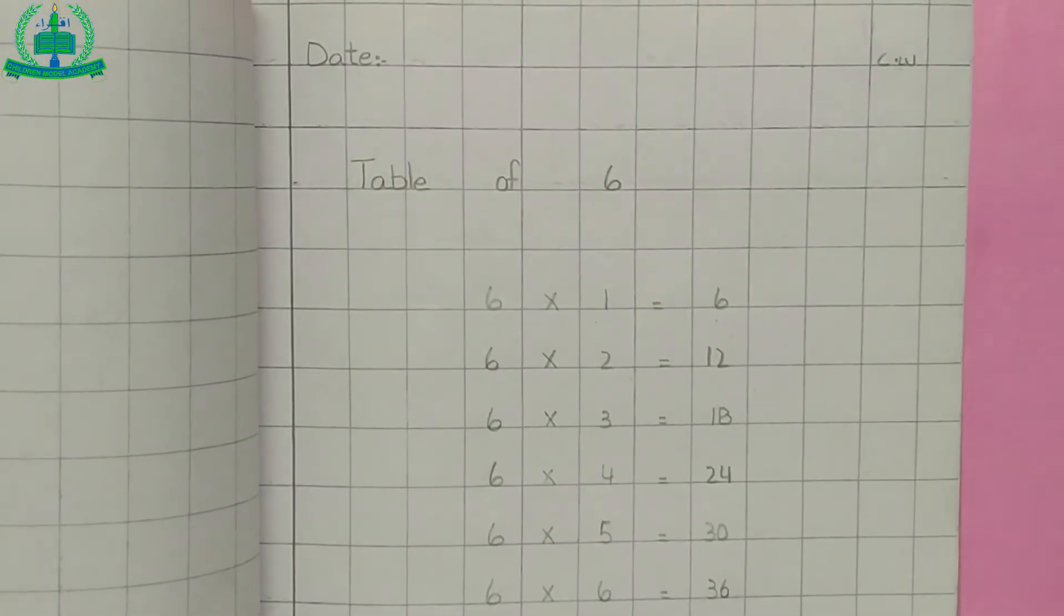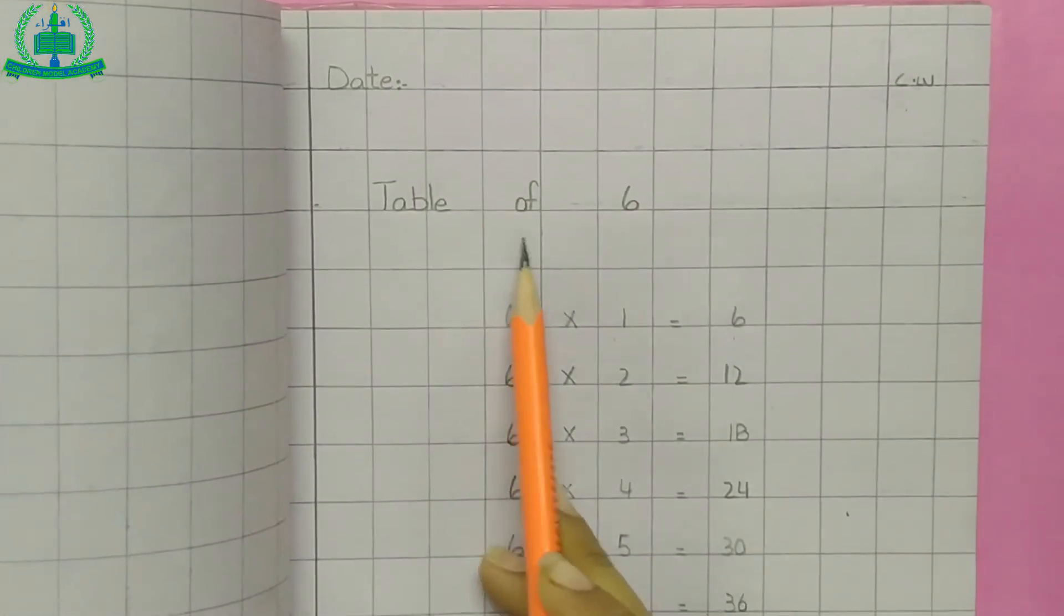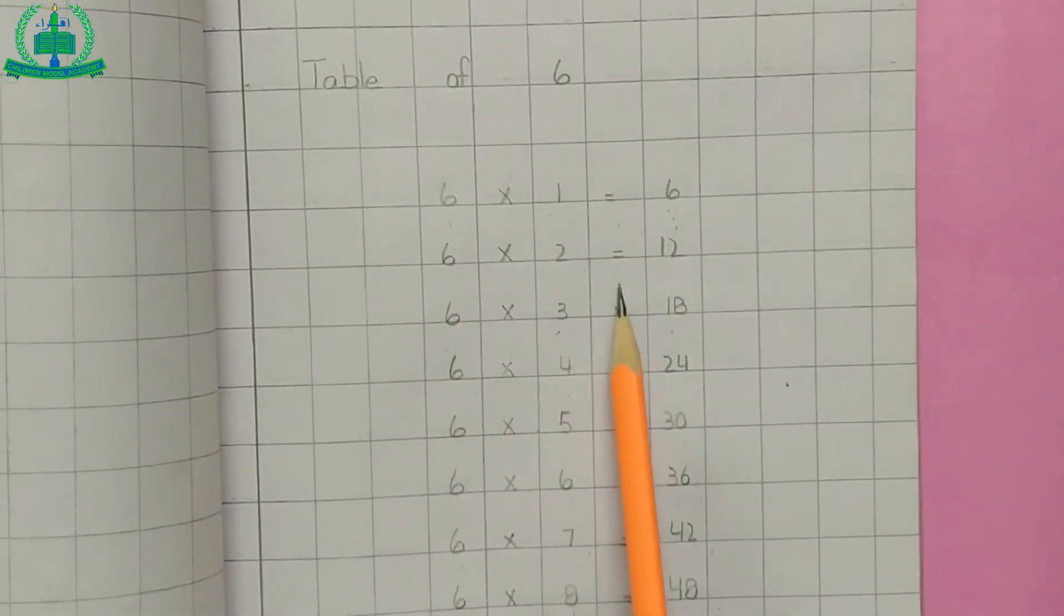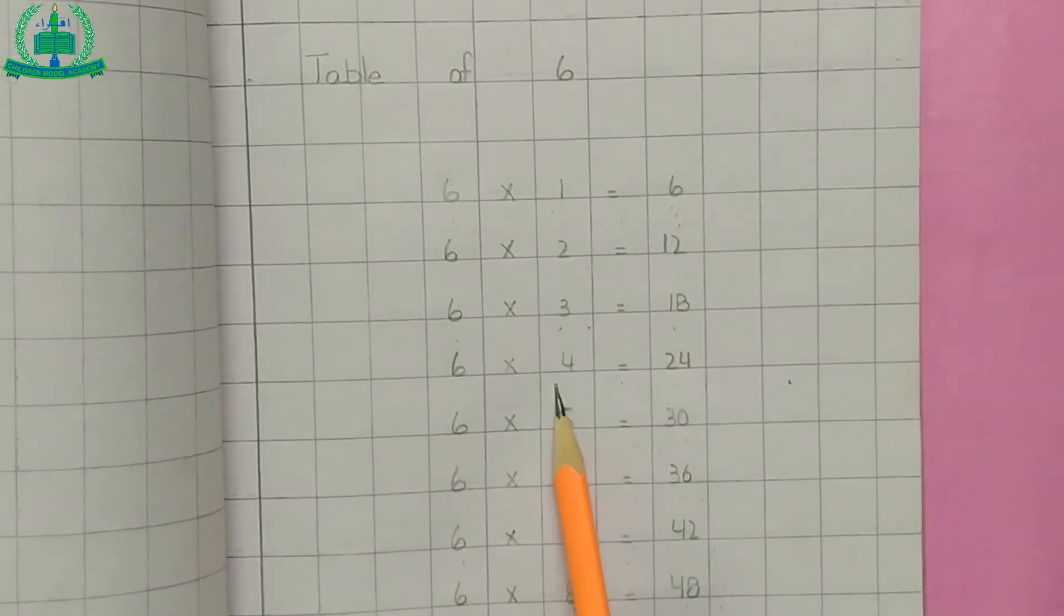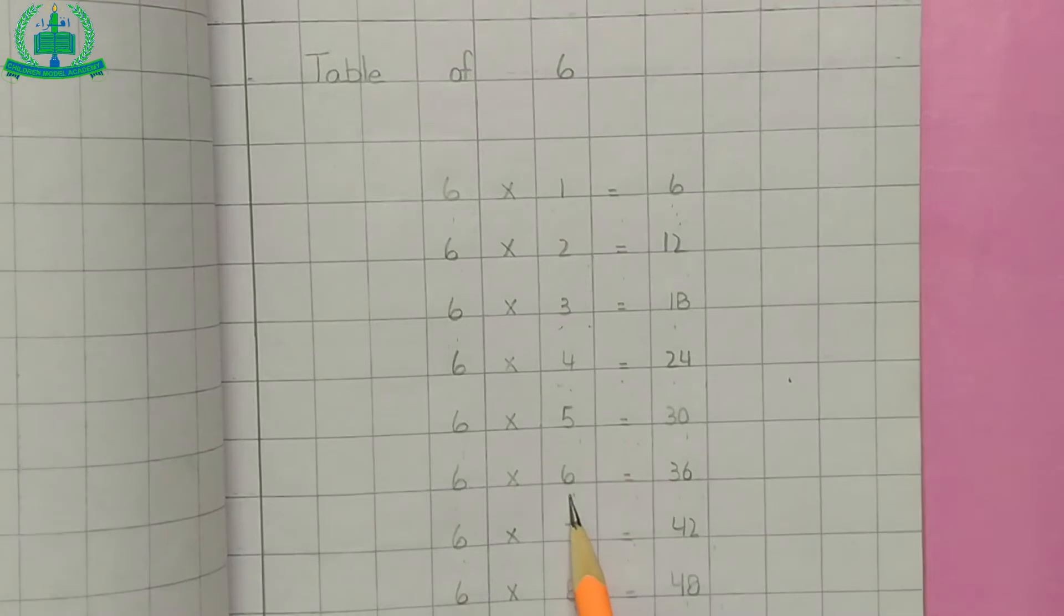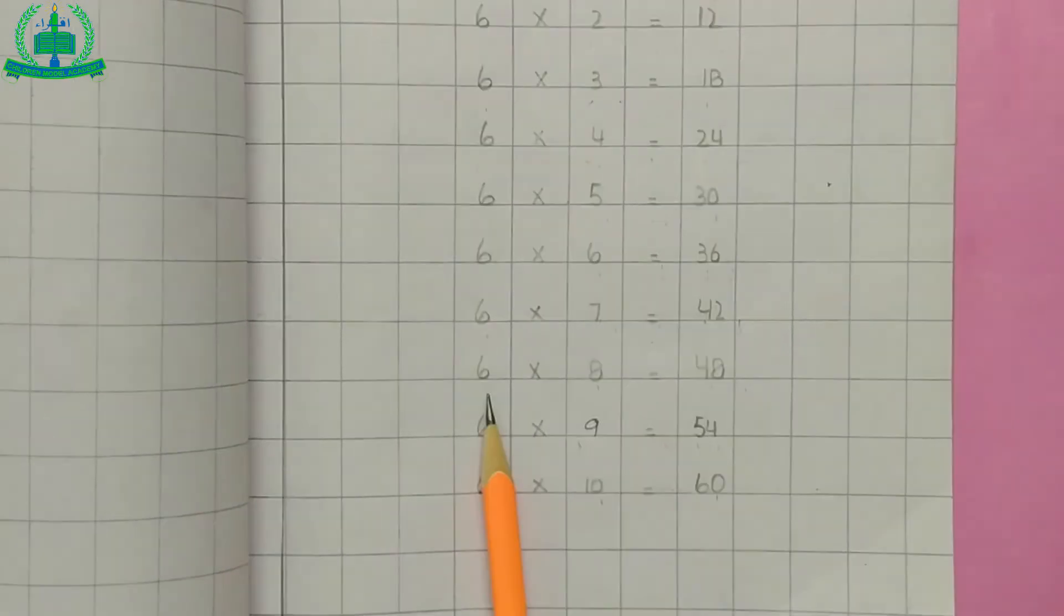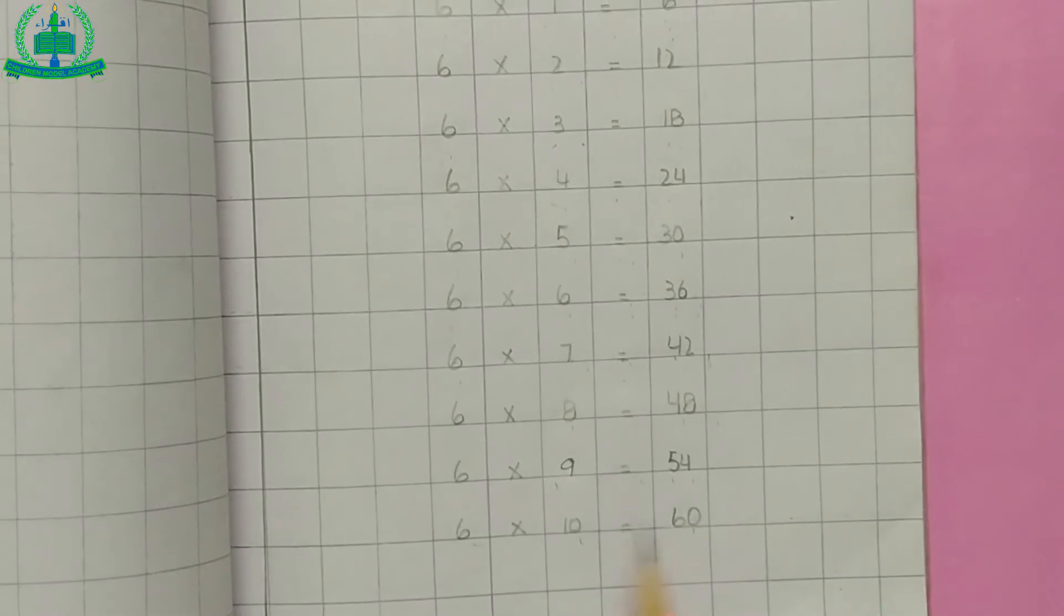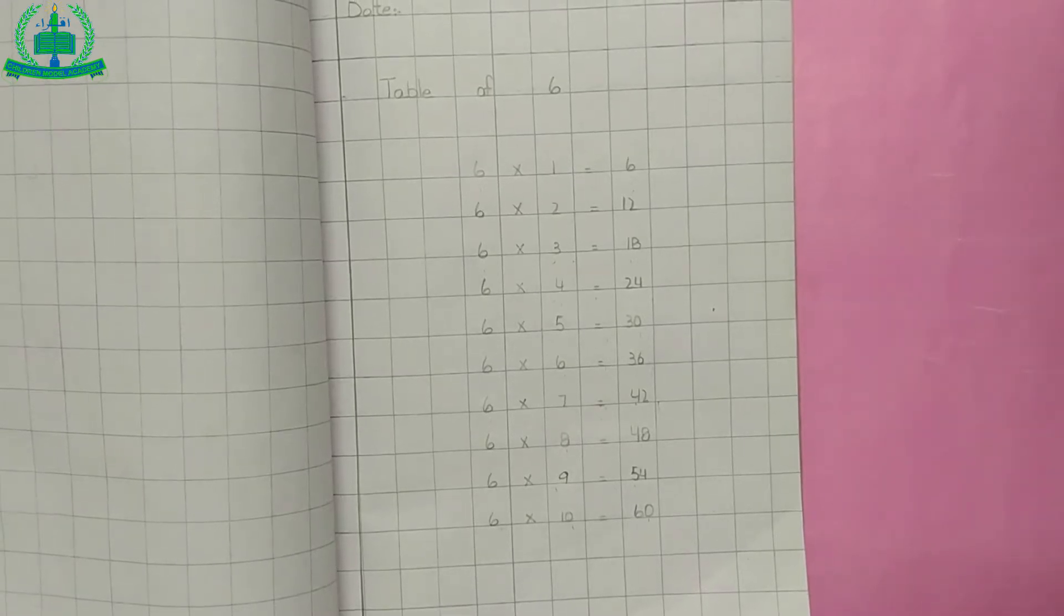Now I am showing you how to write table in your copy. We are starting table of 6. Draw margin line, mention date, mention class word, write table of 6. Six one time is six, six two times is twelve, six three times is eighteen, six four times is twenty-four, six five times is thirty, six six times is thirty-six, six seven times is forty-two, six eight times is forty-eight, six nine times is fifty-four, six ten times is sixty. Do table of 6 in your classwork copy.